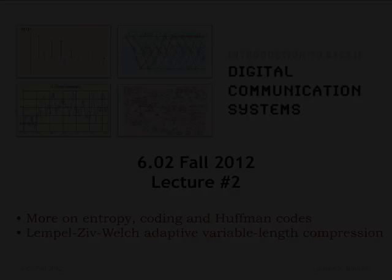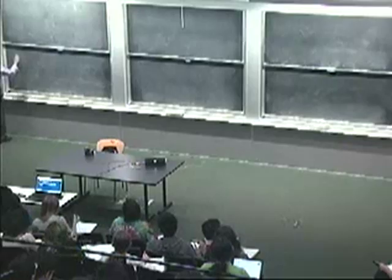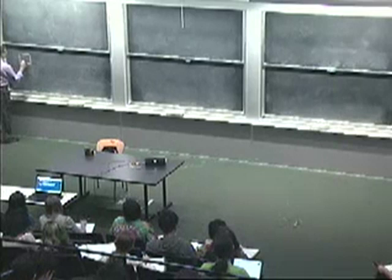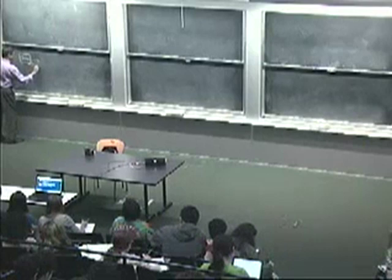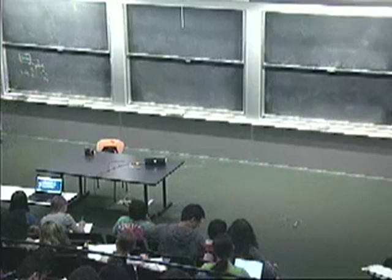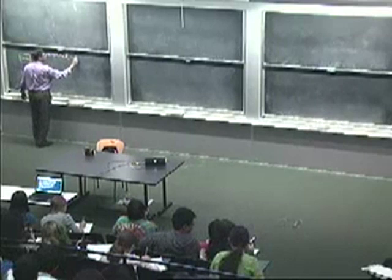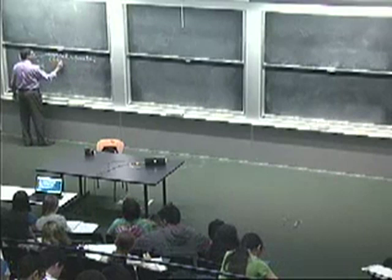Last time we talked about information and entropy. The picture we had was of some kind of a source emitting symbols — let's say n of them — and it chooses from these symbols with probabilities p1 up to pn. We talked about the expected information, or the entropy: the expected information you get when you see the symbol emitted by the source. That was the average value of the information.